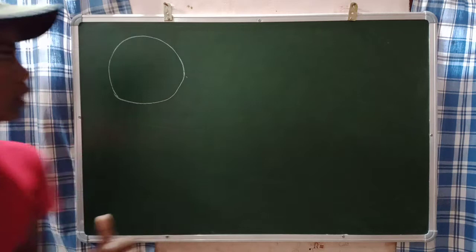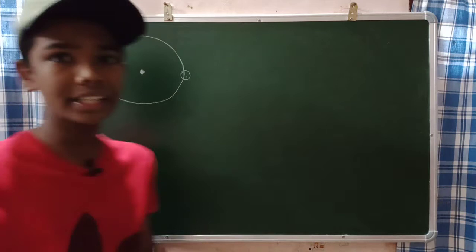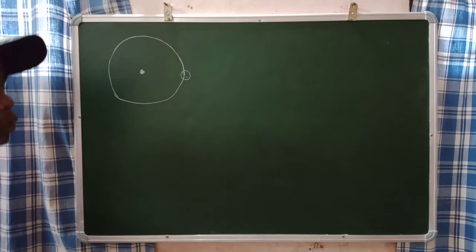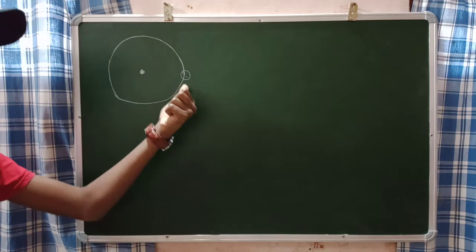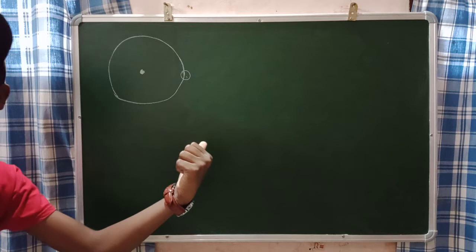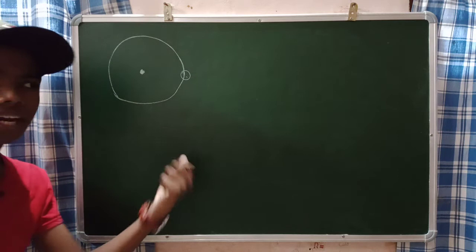Let me say this is a particle moving in this circular motion, and this is the origin — the center of the circular motion. This particle is experiencing non-uniform circular motion, so its speed is varying with time. Now tell me: what are all the accelerations that act on this particle whenever it moves in this non-uniform circular motion?